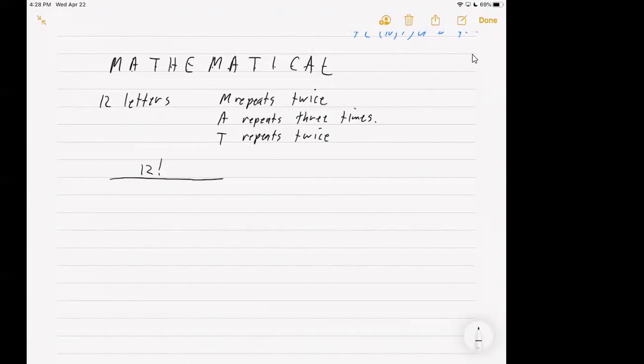But because M repeats itself twice, we're going to have to divide out two. We'll use two factorial, which is two. We're going to have to divide out half of the answers, because switching the two M's doesn't make for a new password.